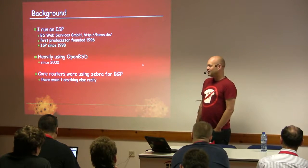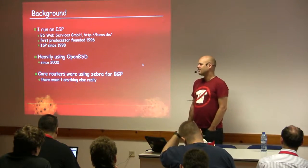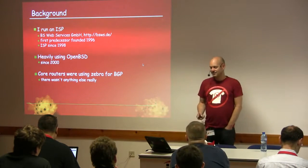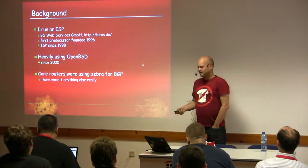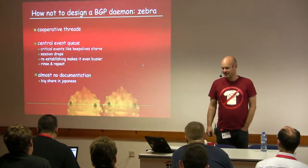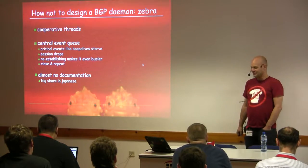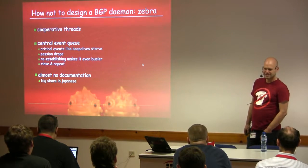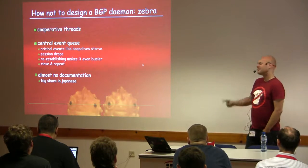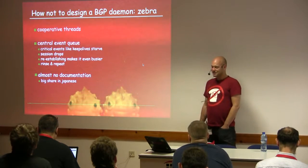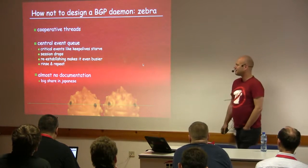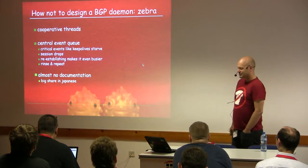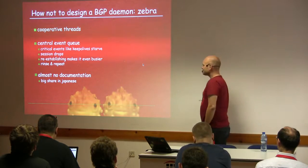Back then, there really was no choice. There was nothing else. There was one alternate implementation that didn't work at all, so it was Zebra or buy Cisco. Zebra is interesting — these days it's called Quagga. That's a good example of how to not design a network daemon and especially not a BGP daemon. First big mistake: they use threads.